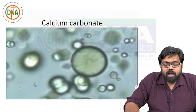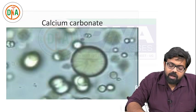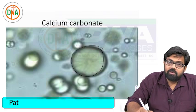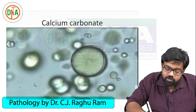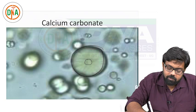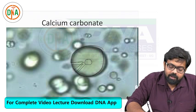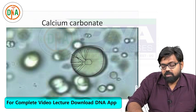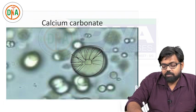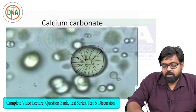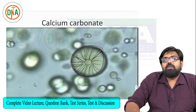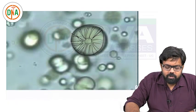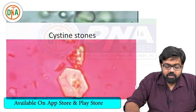Next is calcium carbonate. Most of the crystals will be spherical, and on closer view they will have radiating lines all over - that is the characteristic feature of a calcium carbonate stone. It is spherical with radiating lines toward the center.